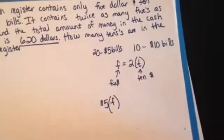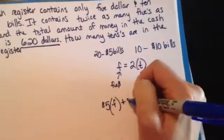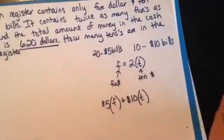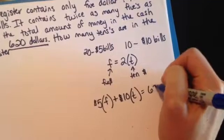and I add that to $10 times the amount of $10 bills in my drawer, then I have to get $620.